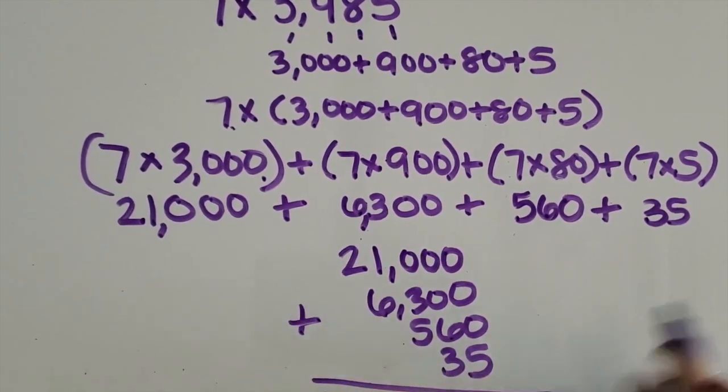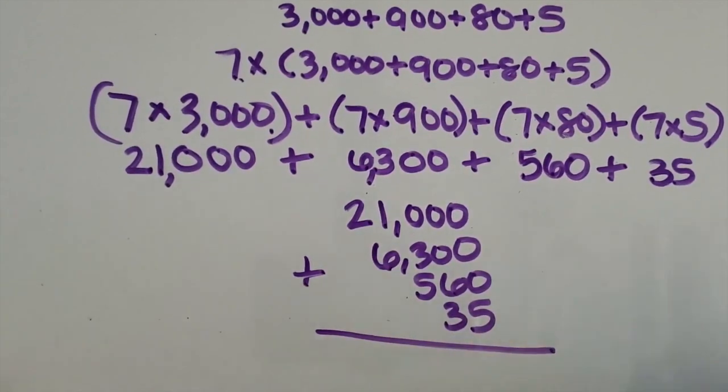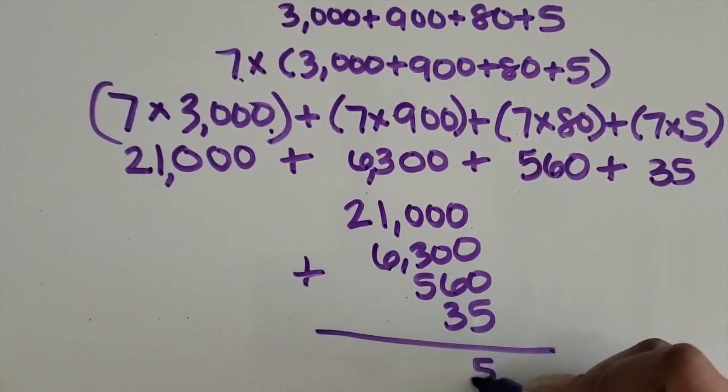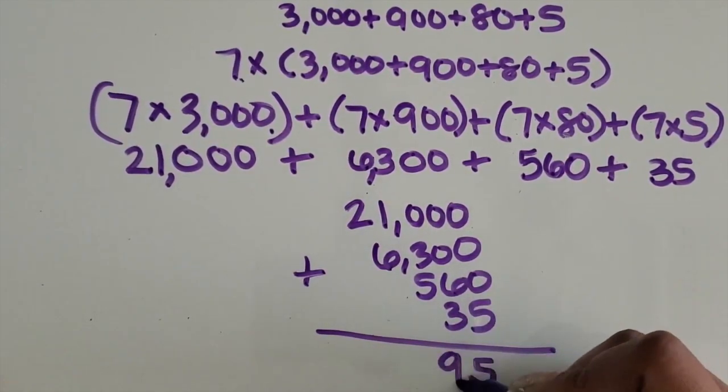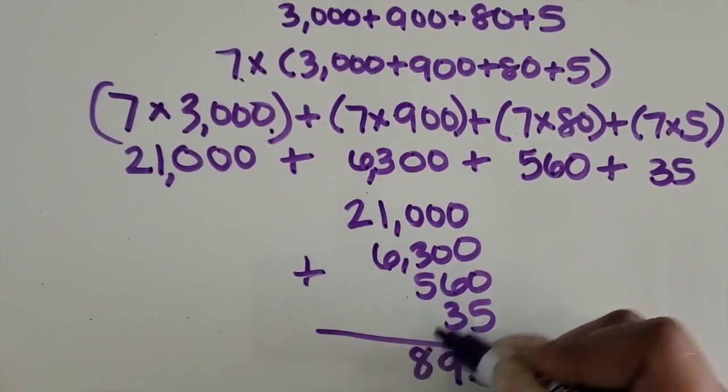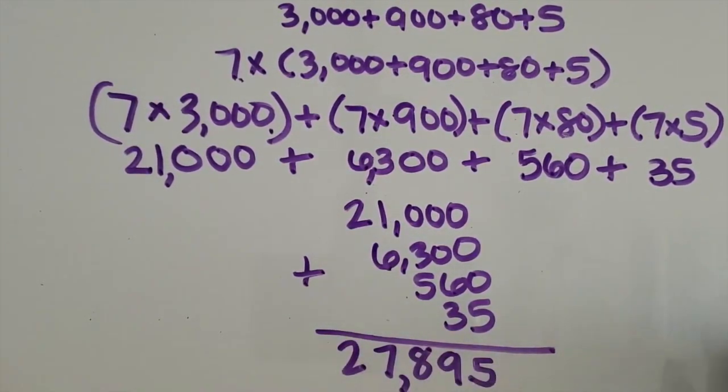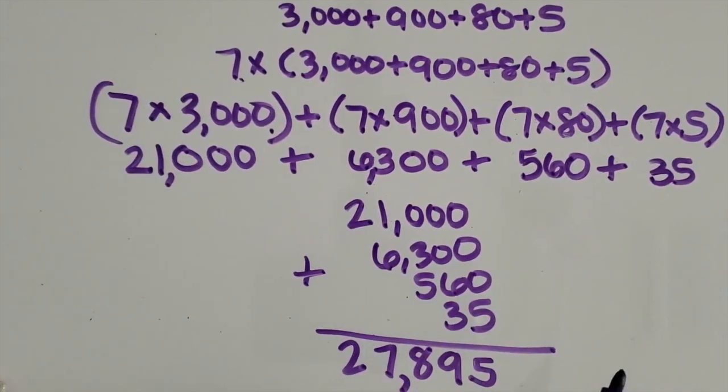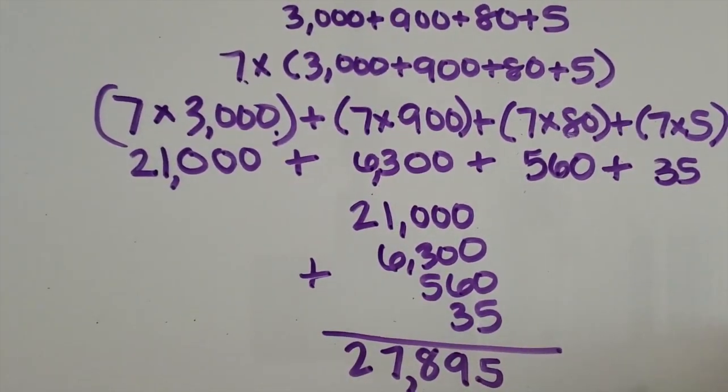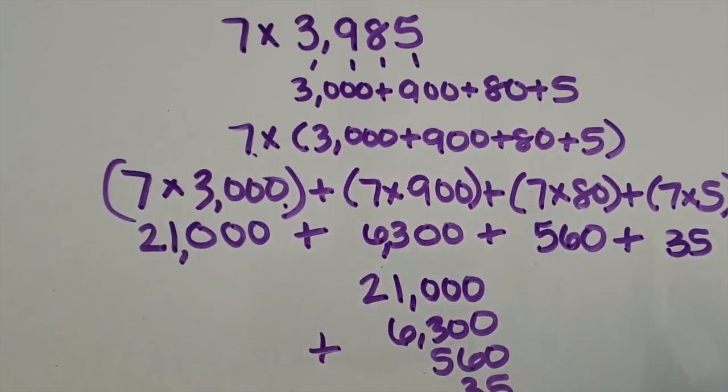Adding those together, we have 5 ones, 9 tens, 8 hundreds, 7 thousands, and 2 ten thousands. So the product is 27,895. I'm going to write that up here.